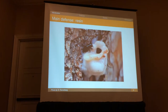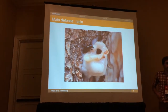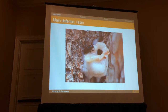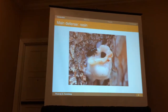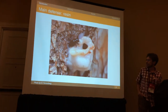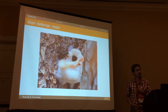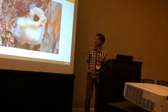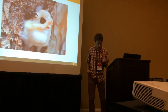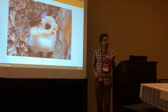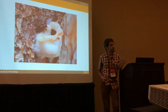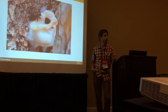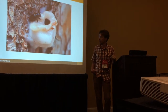Pines have one primary defense against bark beetles, and that is the production of resin — oleoresin. Here we have a Dendroctonus beetle that's been stuck in the resin in the pitch tube, which is the induced response by the pine. Resin production, or variation in resin production, has been implicated as the main source of differential susceptibility to mortality or to succumbing to a bark beetle attack.